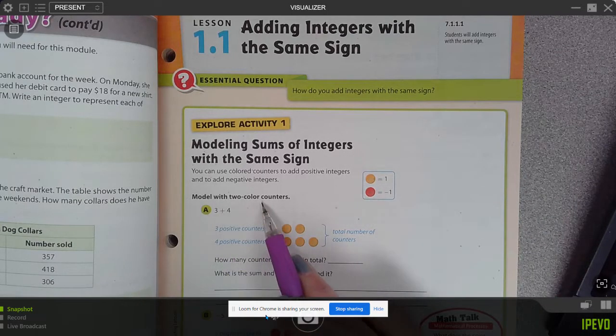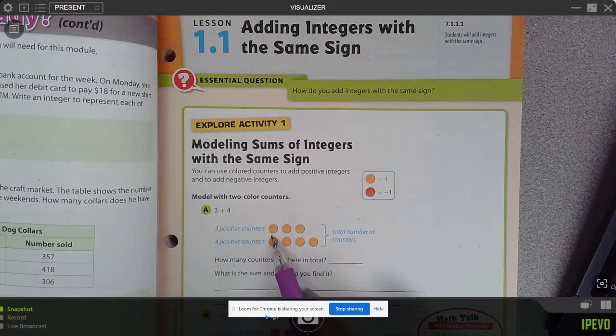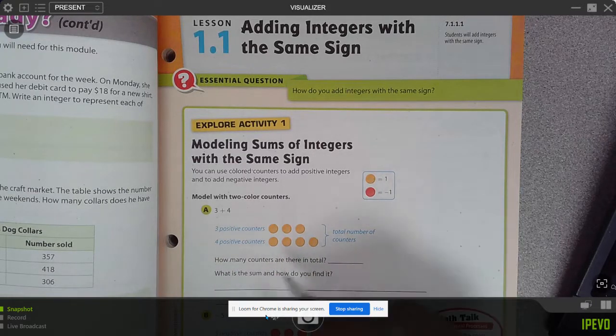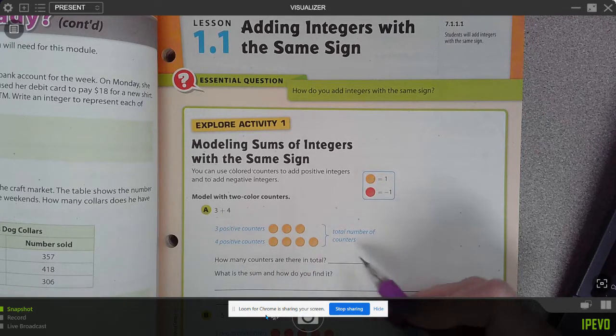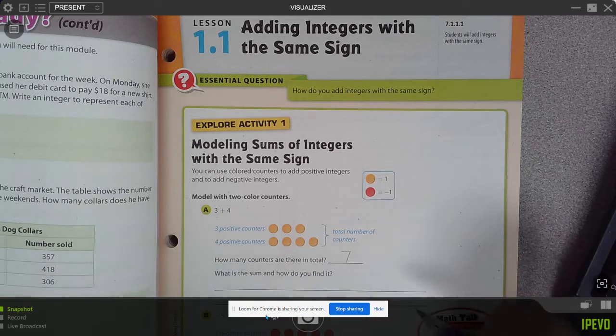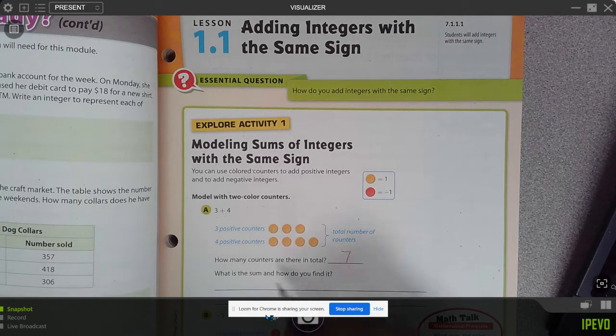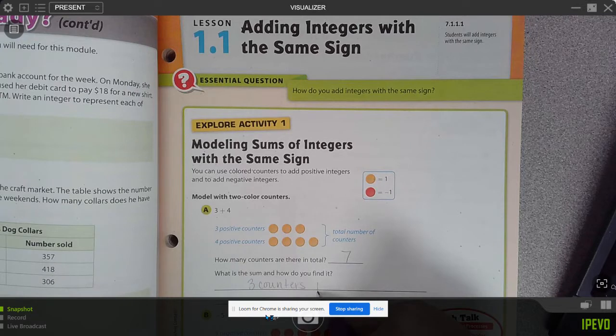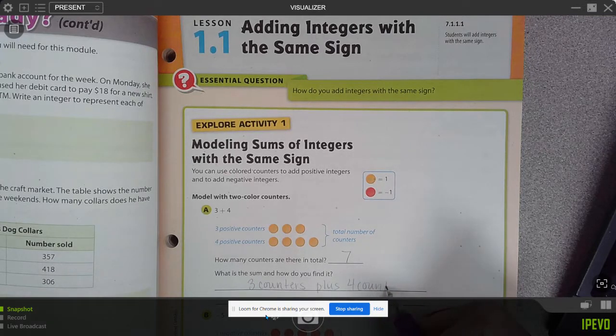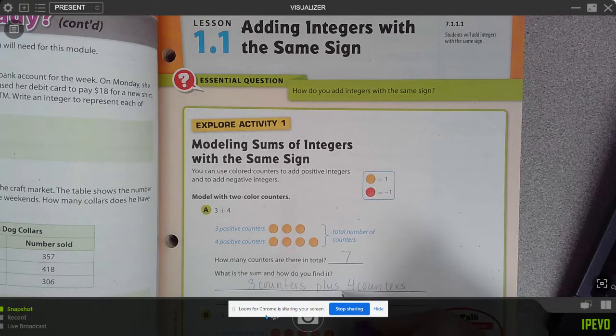So to model two color counters, three plus four, we have three yellows and four yellows. So how many counters are there in all? If you count, there are seven. So what is the sum and how do you find it? Well, if you do three counters plus four counters is seven counters.